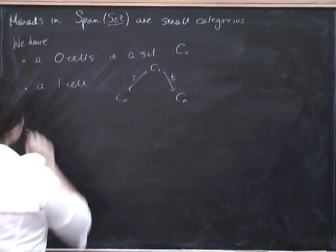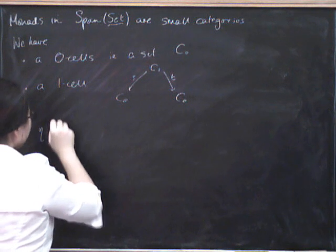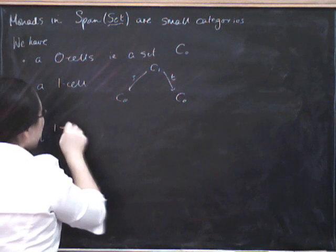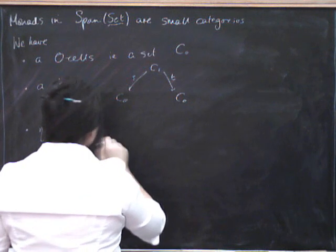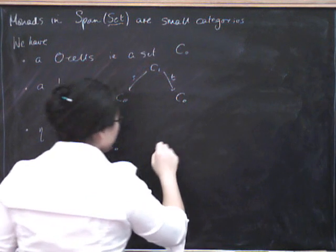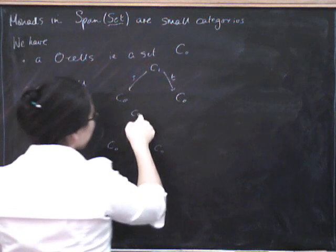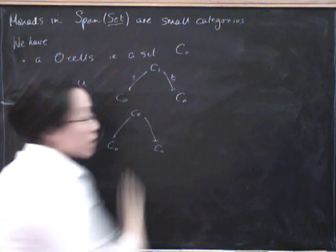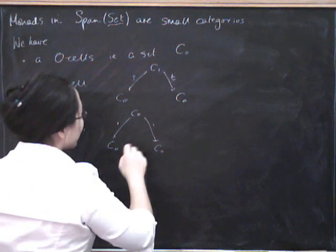So what else have we got to have? We've got to have a unit, eta, which has to go from one to our span. So what's that going to look like? Well, the unit is just the most boring possible span you could ever think of. That's just got the identity here and the identity here.